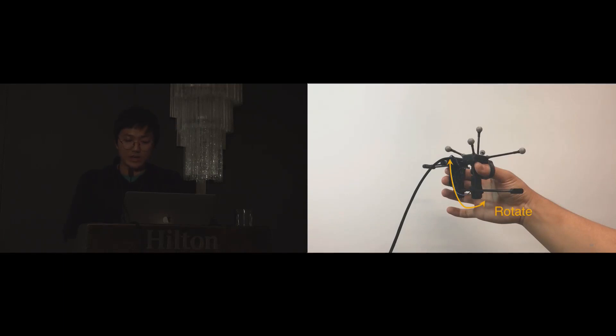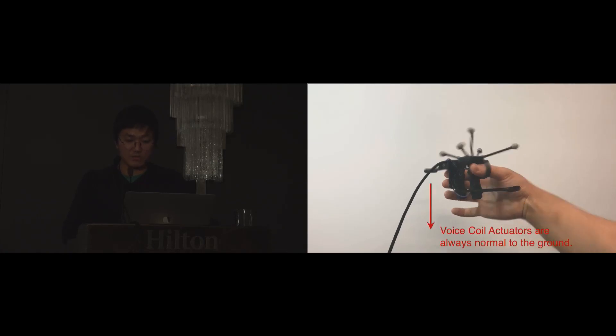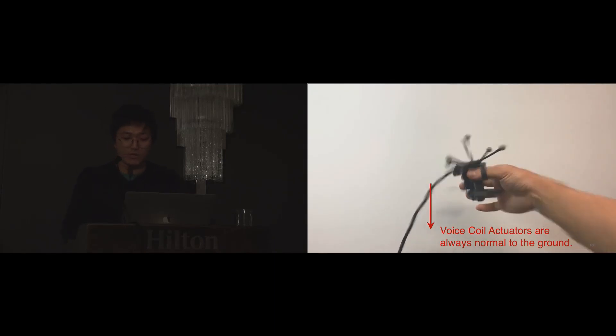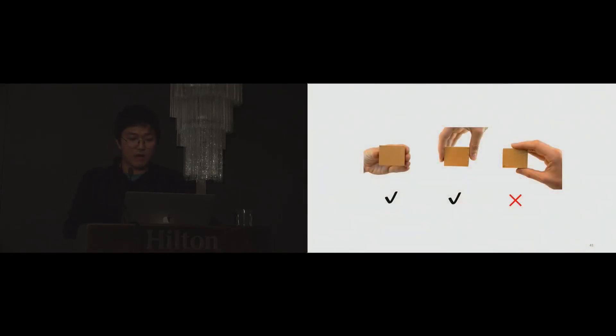The voice coil actuators are connected through bearings, so they rotate passively to align their directions normal to the ground. Because of this, we can render the gravity force even while rotating the device.